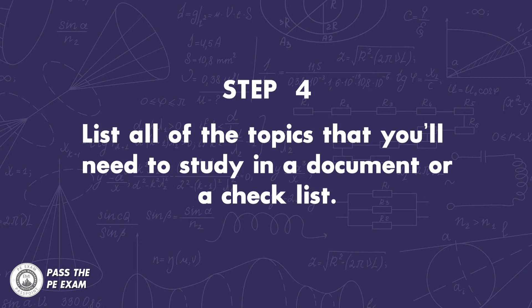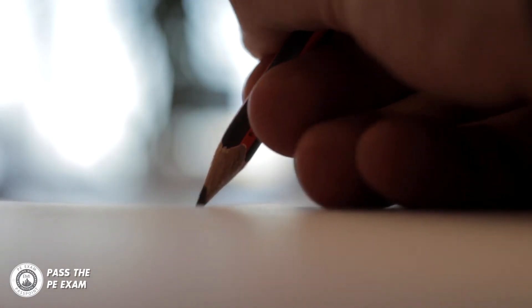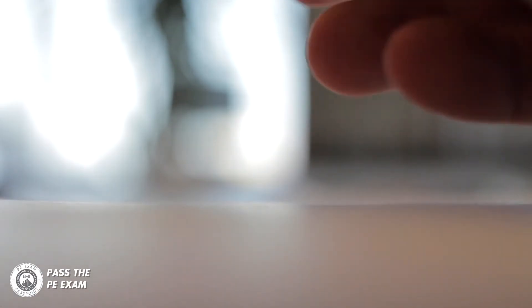Step four: list all of the topics that you'll need to study in a document or a checklist. By doing this, each time you have a study session you will be clear on what to focus on, which will help you to stay motivated. Because if there is any lack of clarity around what you should be studying, you may just stop studying. It happens to everyone — if there is no clear action, we don't take one.